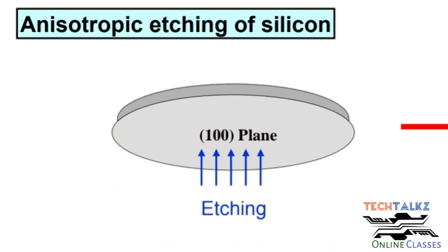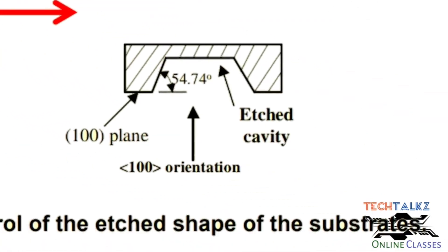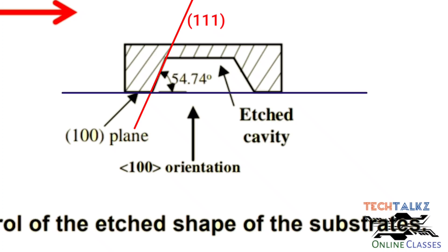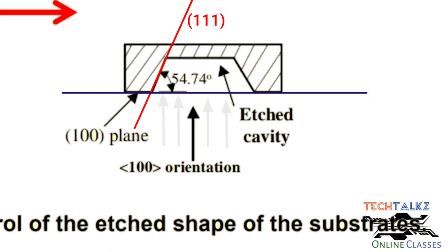In the anisotropic etching of silicon, when the etching solvent is applied to the 1-0-0 plane of silicon, the 1-0-0 plane makes an angle of 54.74 degrees with the 1-1-1 plane. Etching proceeds in the 1-0-0 direction. The 1-1-1 plane is not significantly etched compared to the 1-0-0 plane. This is the top view of the process.